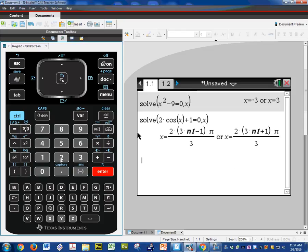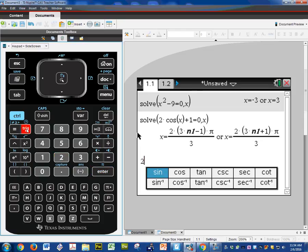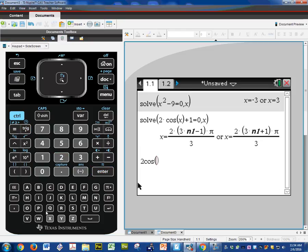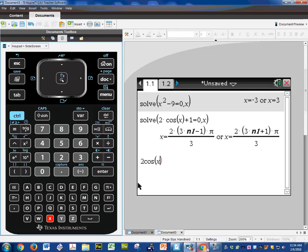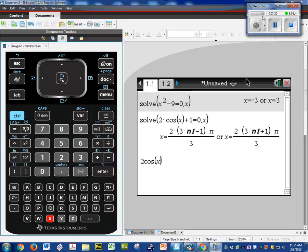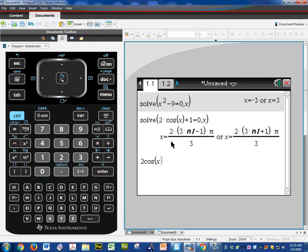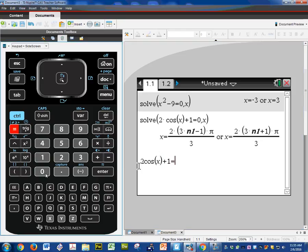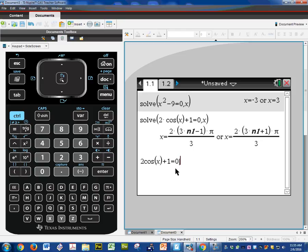I'm going to go ahead and type in that same equation. Plus one is equal to zero. And here's where it gets tricky. We're going to put a restriction on this. So let's say I want to solve this on the closed interval from zero to two pi. And basically one revolution.